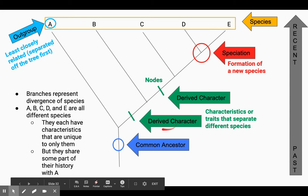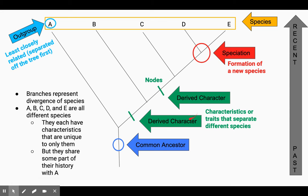Then over here we have some derived characters. These are characteristics or traits that separate different species. They're also called nodes. So if you see that word, that means it's a derived characteristic or trait that evolved or that came to be during this time.